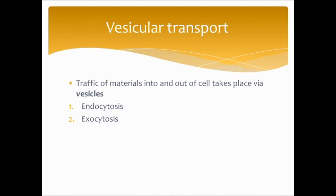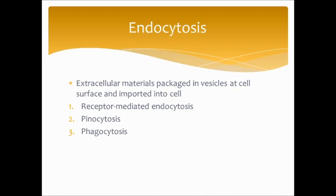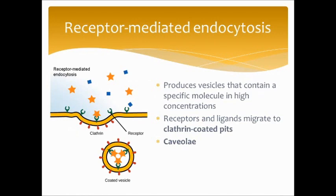Vesicular transport is another type of active transport that traffics material into and out of the cell via vesicles. The two types are endocytosis and exocytosis. Endocytosis — 'endo' means within, 'cyto' means cell — brings material into the cell. There are three types: receptor-mediated endocytosis, pinocytosis, and phagocytosis. Receptor-mediated endocytosis produces vesicles with specific molecules in high concentrations; receptors and ligands migrate to clathrin-coated pits, which are kind of sticky, or into caveolae, which means tiny caves.